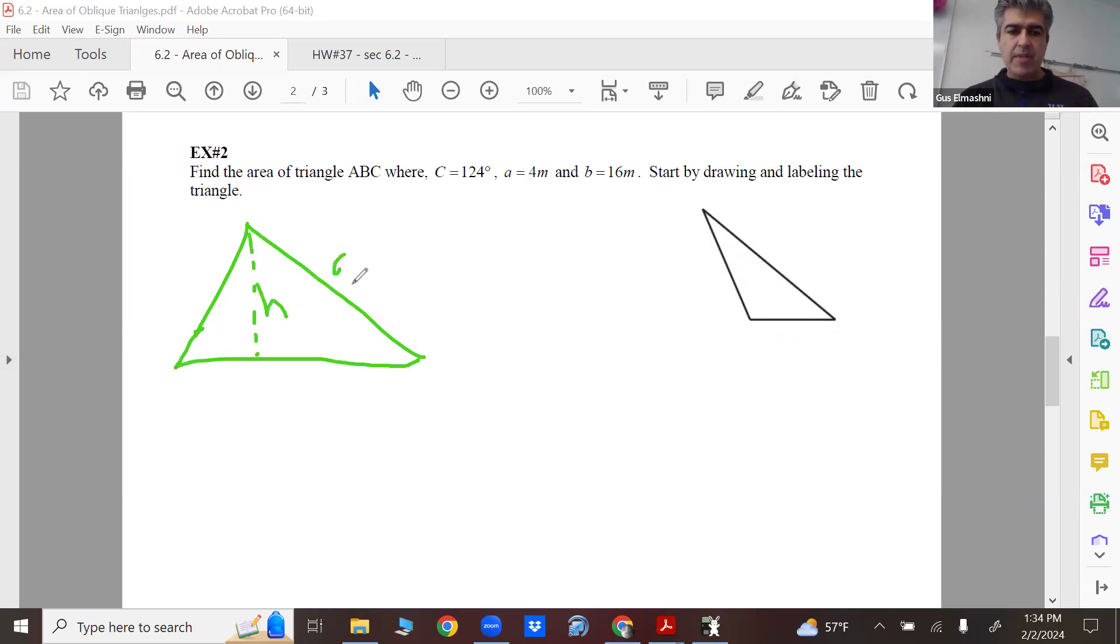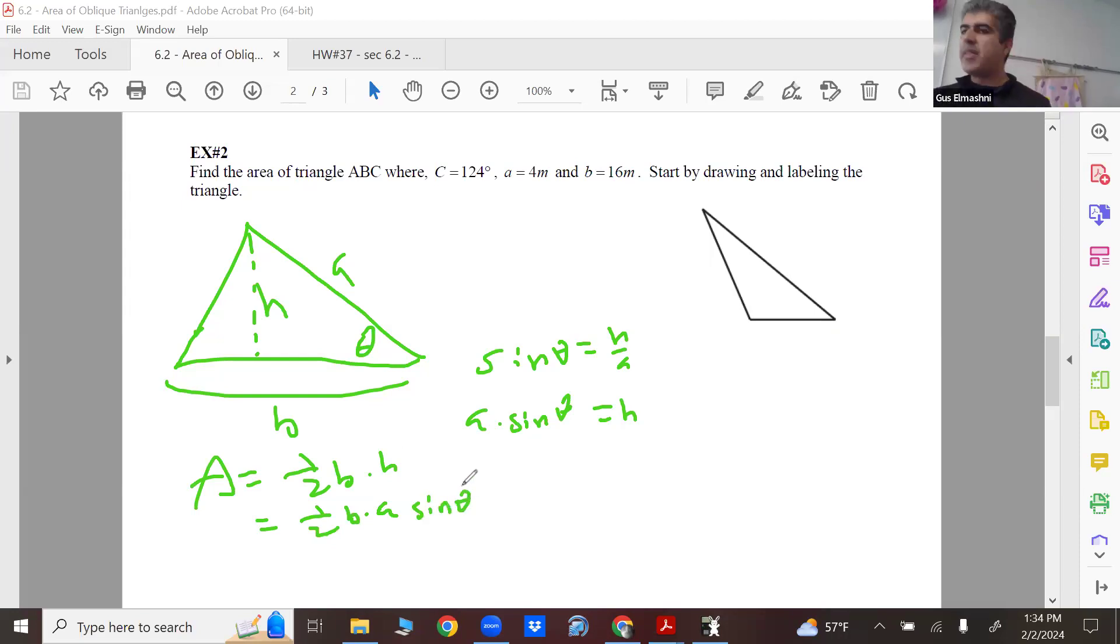And again, why it works. That's h, that's a, that's b, and that's theta. What's sine theta, guys? h over a. What's h? a times sine theta. What's the area of a triangle? One half times base times height. What's your height? a times sine theta. Boom, there you go. That's why it works. That's why it works, because it's just using basic SOH CAH TOA rules.